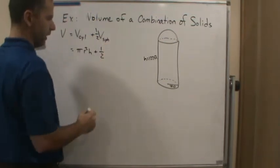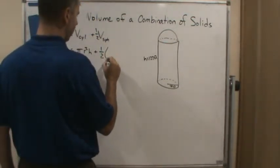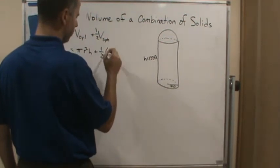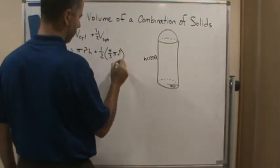So the volume of a cylinder is going to be pi r squared h plus one-half the volume of a sphere. Well, the volume of a sphere, this is one you're going to have to know, is four-thirds pi r cubed.